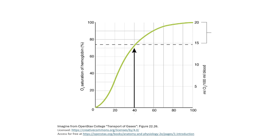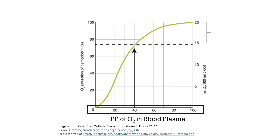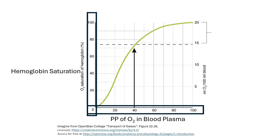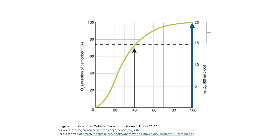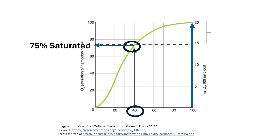What we must look at is the oxygen-hemoglobin dissociation curve. On the x-axis is the partial pressure of oxygen within the blood plasma and thus the intracellular fluid of the red blood cells, ranging from 0 to 100 millimeters of mercury. On the y-axis is how saturated hemoglobin is with oxygen, ranging from 0 to 100%. The partial pressure of oxygen within the blood plasma of deoxygenated blood is 40 millimeters of mercury. Looking at the curve, when the partial pressure of oxygen is 40 millimeters of mercury, hemoglobin is approximately 75% saturated.